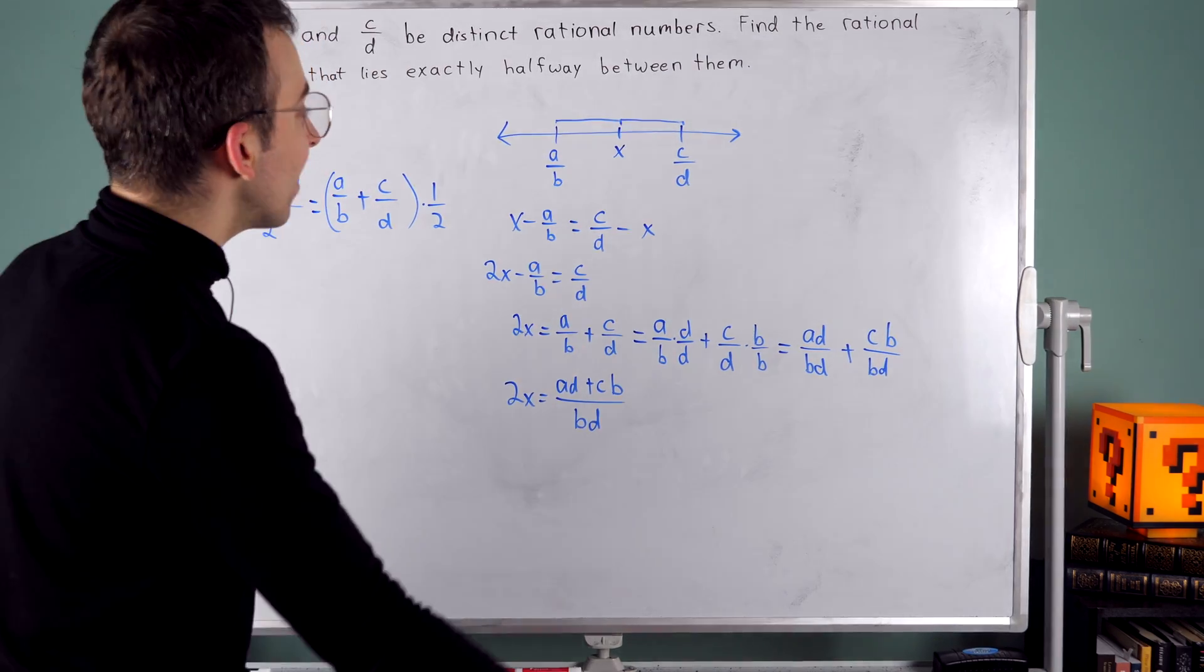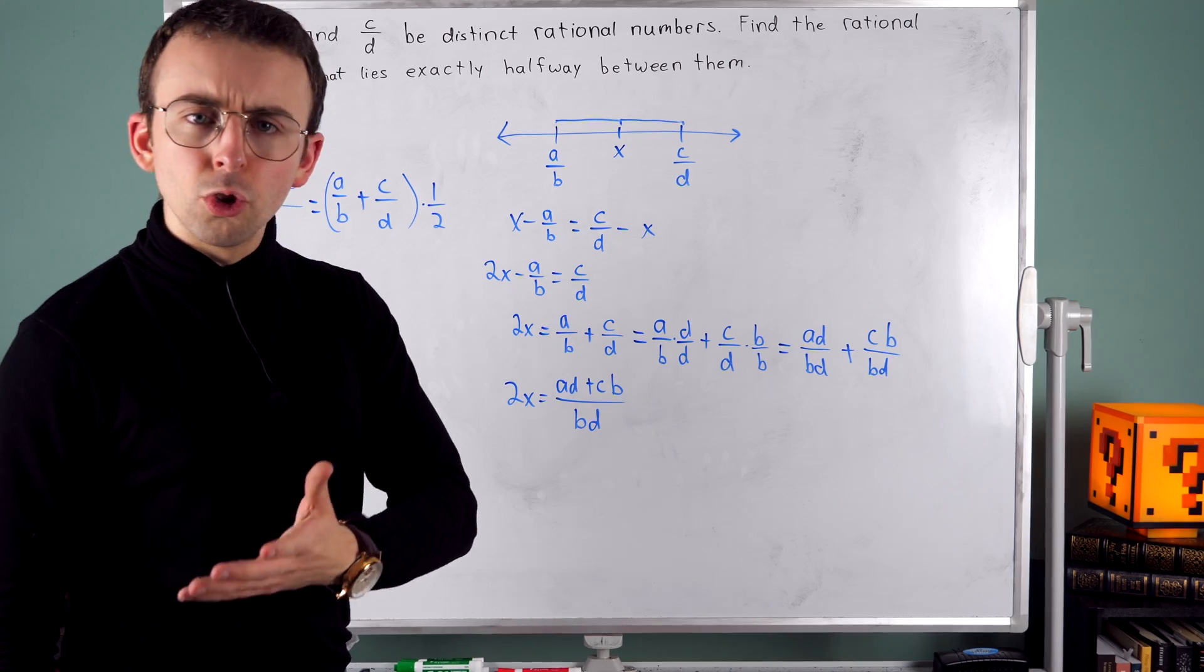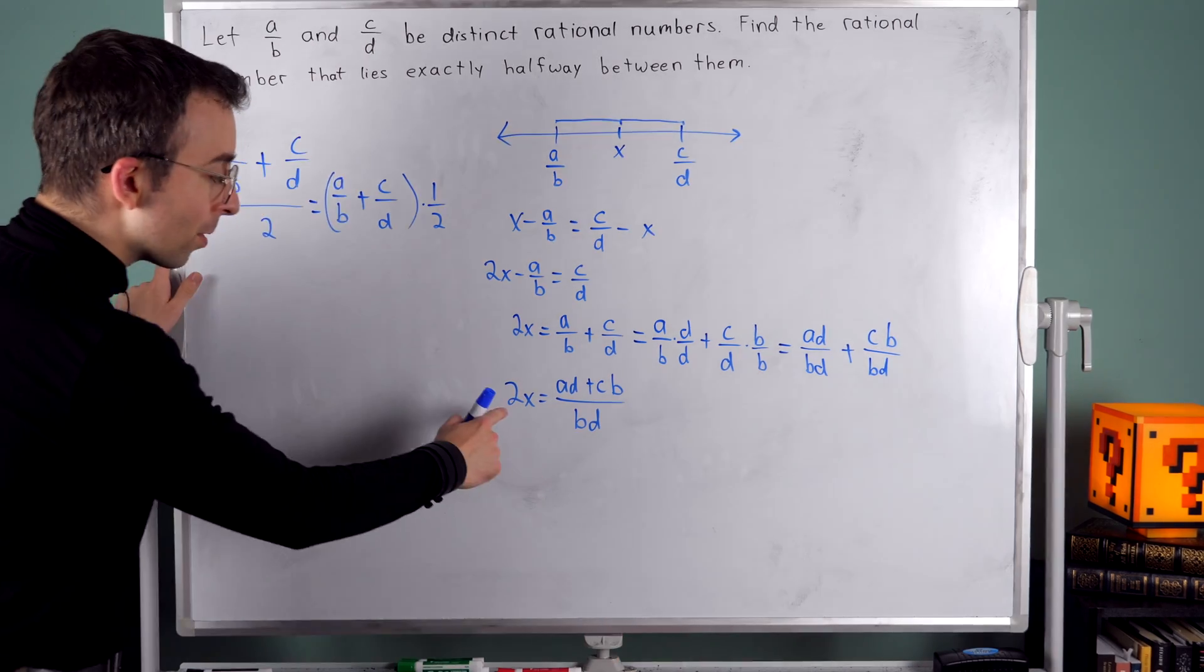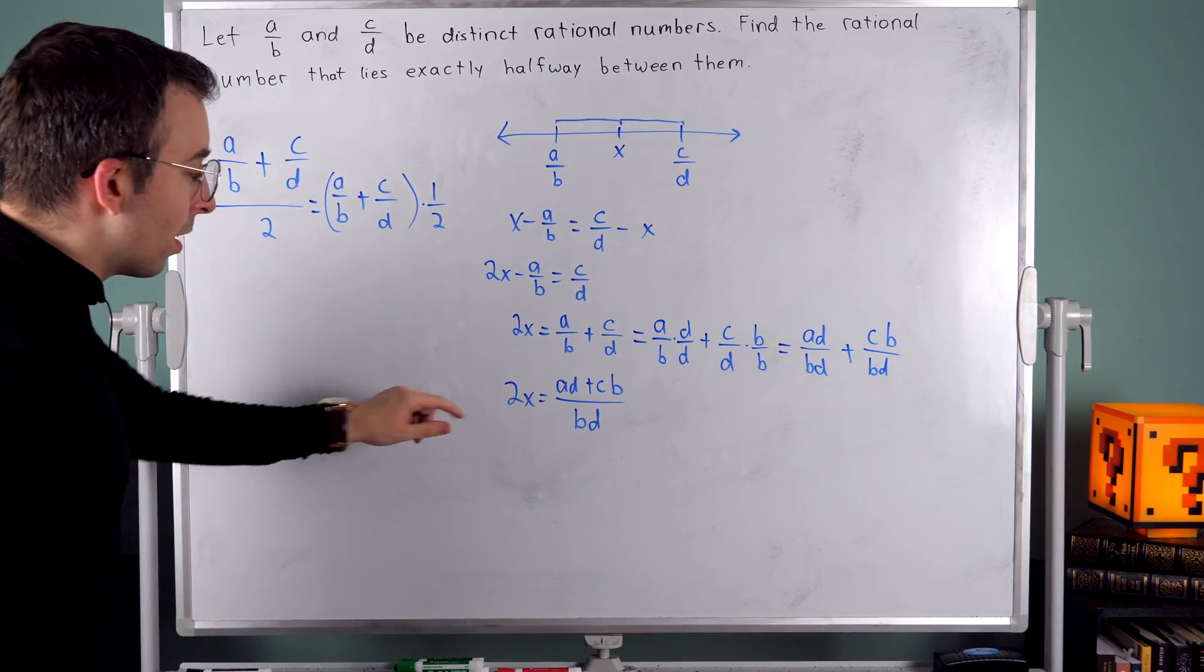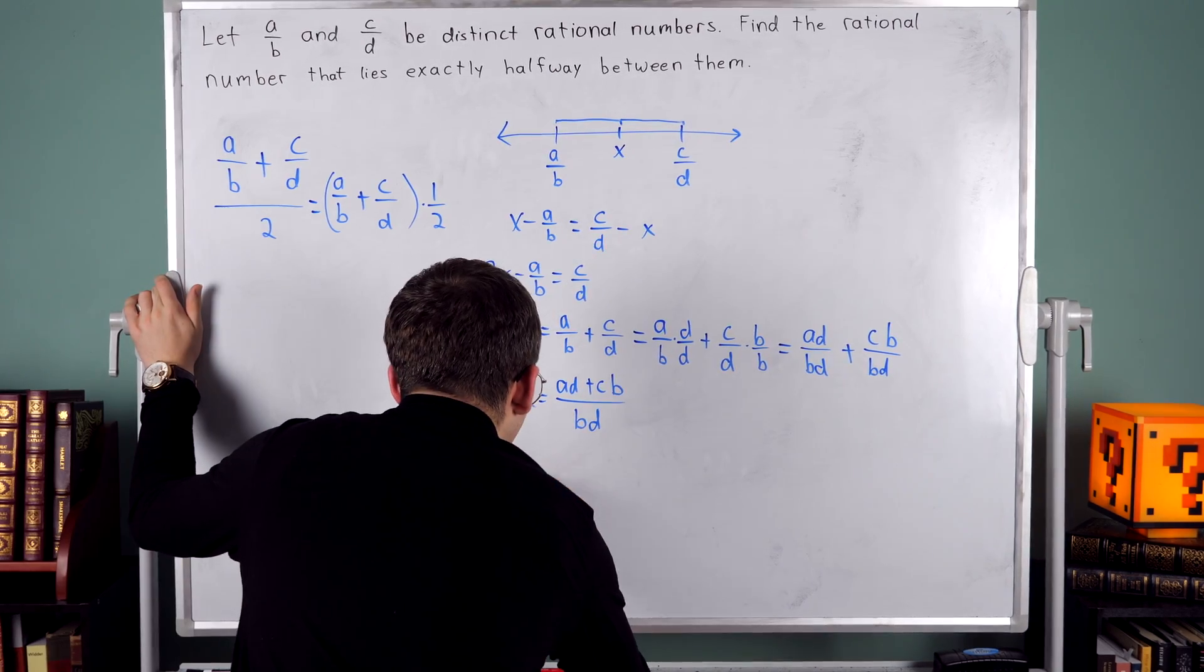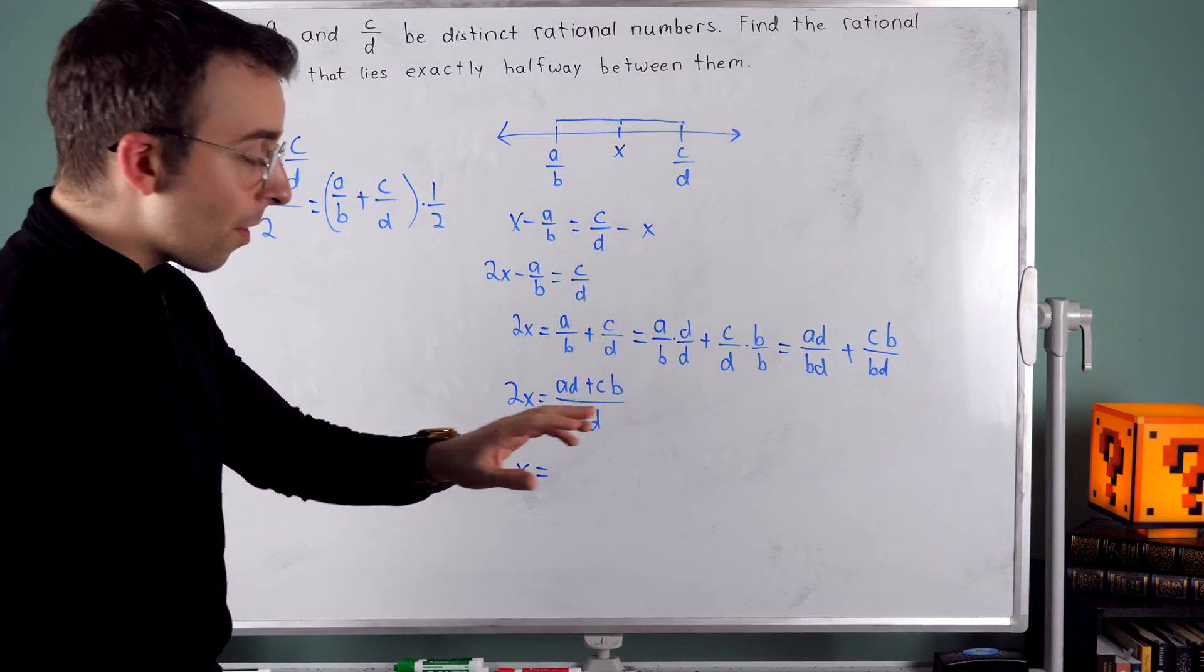Now to finish solving for X, the number that's exactly halfway between the two original rational numbers, I've just got to divide both sides by two to get rid of this factor of two. So on the left, I'll have just X.